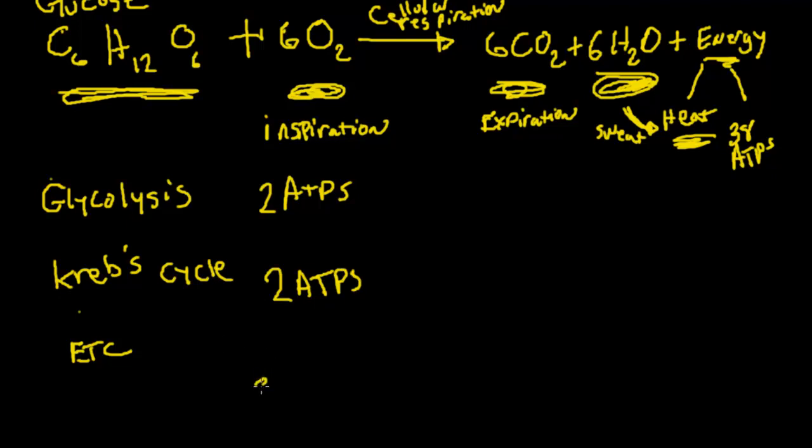And we're getting about 34 ATPs in the electron transport chain. For glycolysis, you're also getting some pyruvate. And that's what we talked about last time. We were breaking down glucose into PGAL. And eventually we'd get pyruvate. So we'd have two pyruvates that could go into the Krebs cycle.